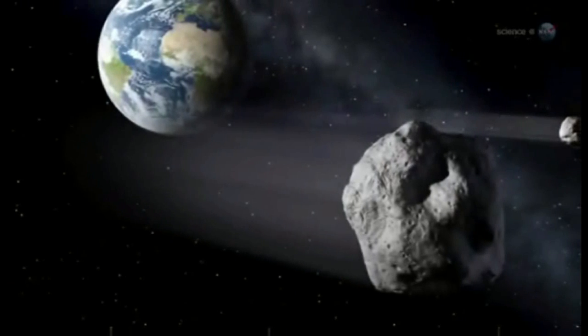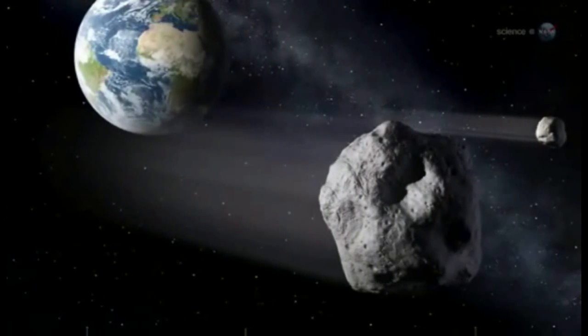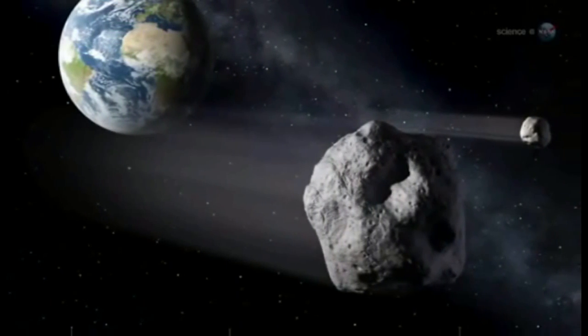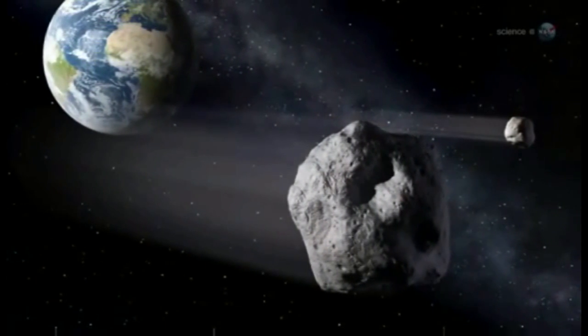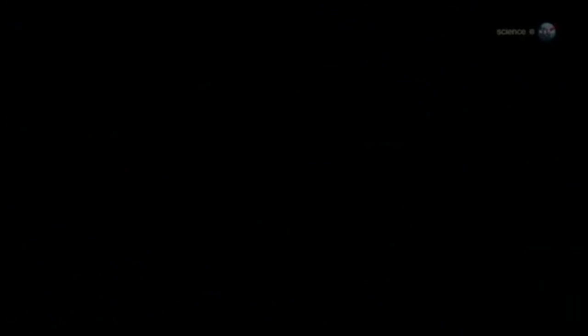Yeomans estimates that an asteroid like 2012 DA14 flies past Earth, on average, every 40 years, yet actually strikes our planet only every 1,200 years or so.